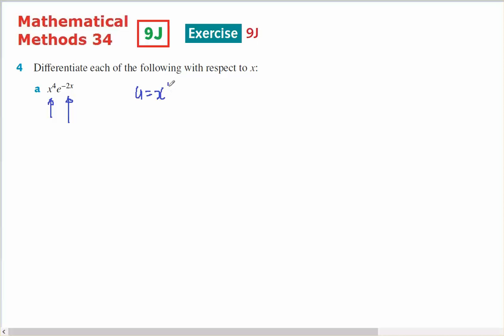So u is going to equal x to the power of 4, which means u dash will be 4x to the power of 3.